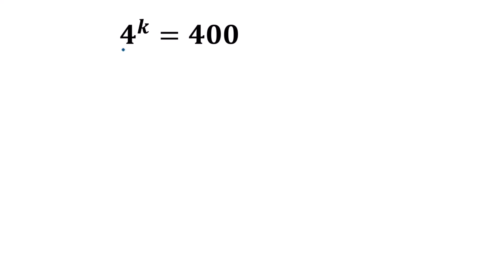Hello everyone. In this video I am going to show how to find the value of k where 4 to the power k is equal to 400. Taking log of both sides, we will get log of 4 to the power of k on the left side is equal to log of 400 on the right side.